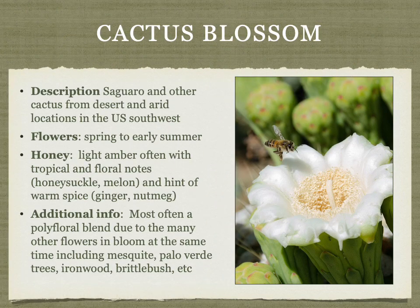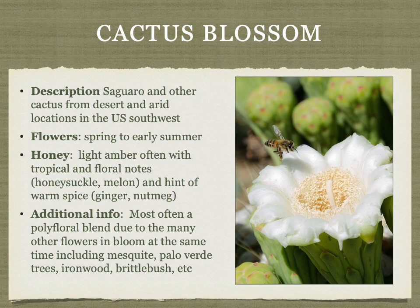Cactus blossom honey is produced in the US Southwest from saguaro and other cacti. It's often not a monofloral honey but a polyfloral blend, as other flowers like mesquite and palo verde are often in bloom simultaneously. The honey is variable due to those varied floral sources, sometimes with tropical and floral notes with a hint of warm spice.